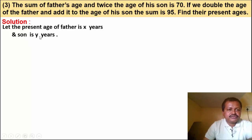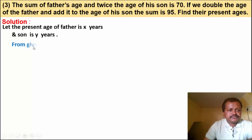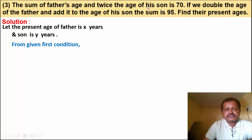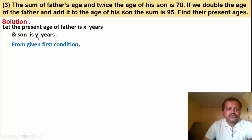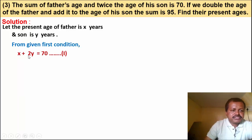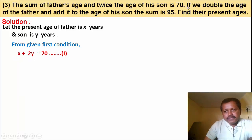From the first condition: the sum of father's age and twice the age of his son. So the equation is x plus 2y is equal to 70. This is equation number 1.